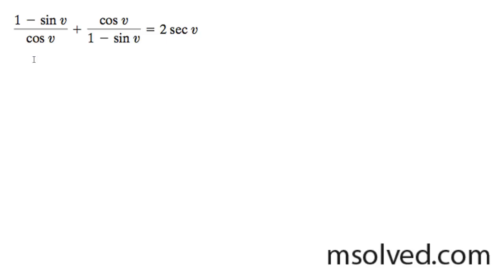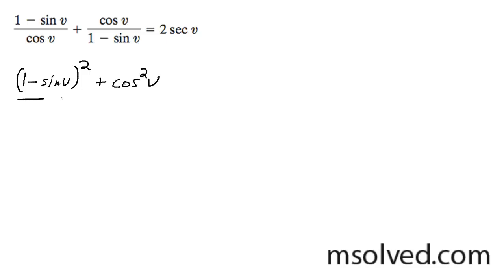All right, to prove the trig identity here, what we're going to do is just multiply through and get common denominators. So in this case, for the left portion, I'm going to multiply through by 1 minus sine v, and this becomes 1 minus sine v squared. And then over here, to get a common denominator, you have to multiply through by cosine v, and this becomes cosine v squared. And all this is over cosine v quantity 1 minus sine v.